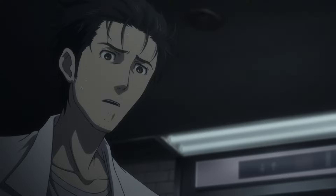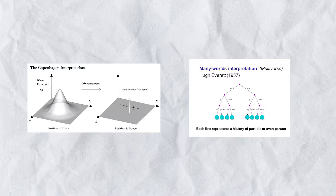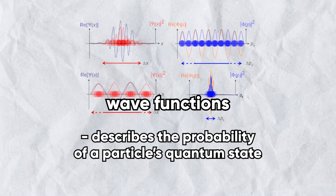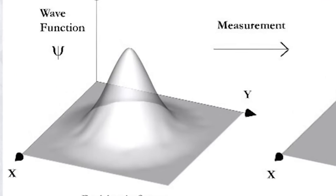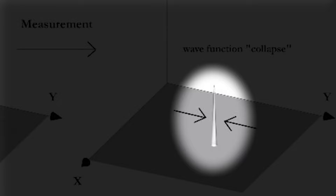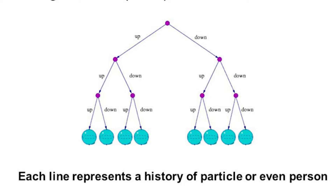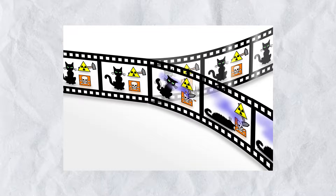Suzuha also says that this model cherry picks from the many worlds interpretation and the Copenhagen interpretation. Both of these theories of quantum mechanics deal with wave functions — a wave function describes the probability of a particle's quantum state and is used to determine the current state of a quantum system. In the Copenhagen interpretation, a wave function contains all possible states, but the wave collapses onto a single state when it's observed. Meanwhile, the many worlds interpretation suggests that the waves don't actually collapse, but that all possible states actually happen across different universes. Let's look at the famous Schrödinger's cat example with both theories.